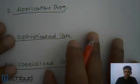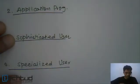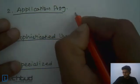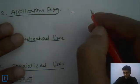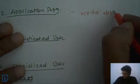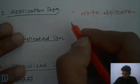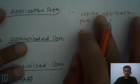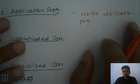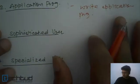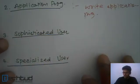The next kind of user is application programmer. The application programmer is a kind of user who writes programs.